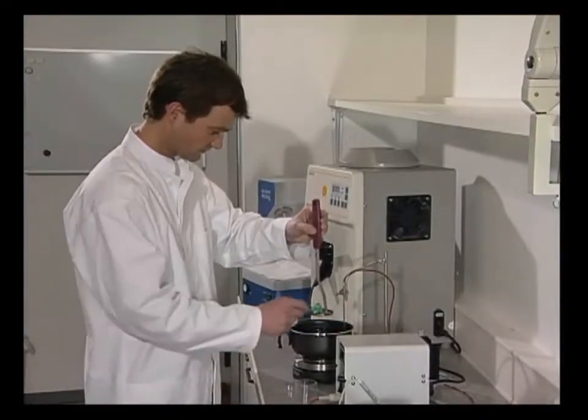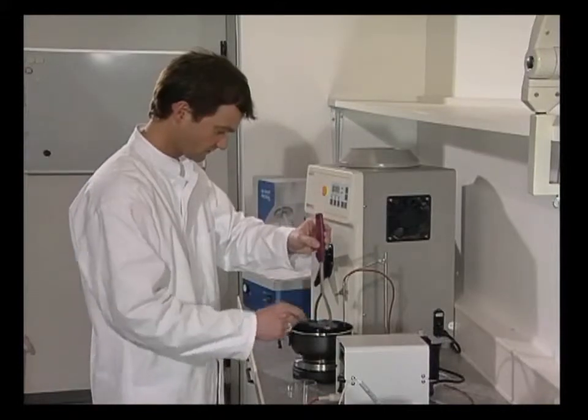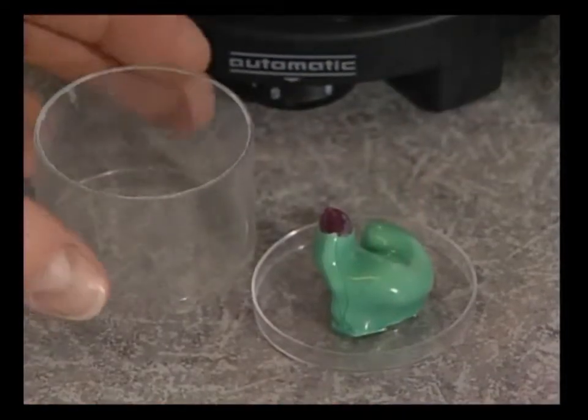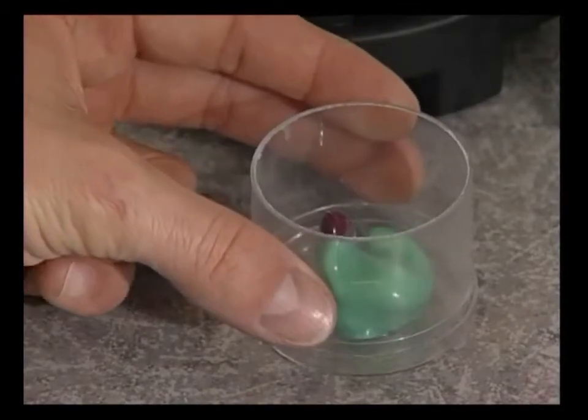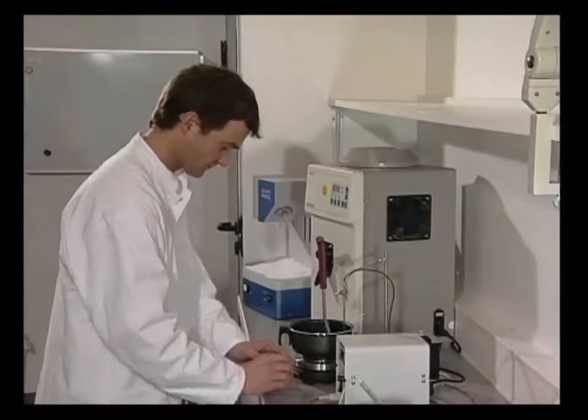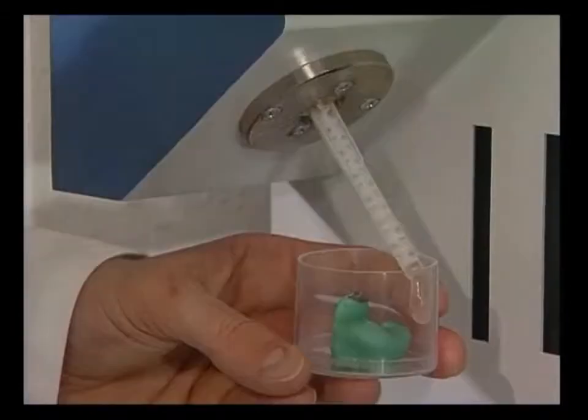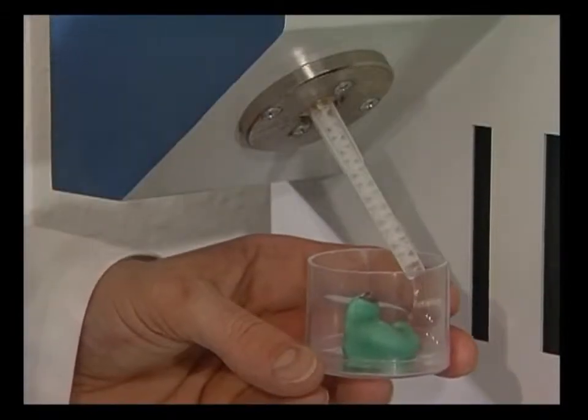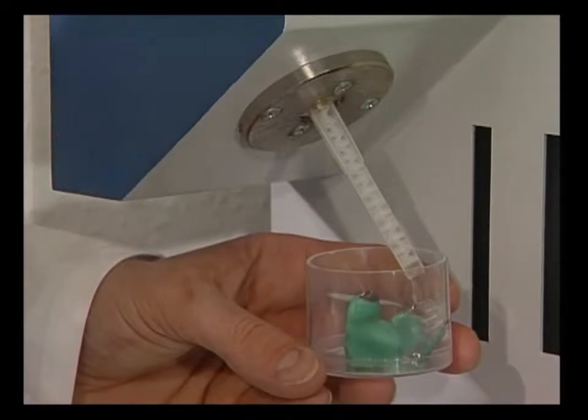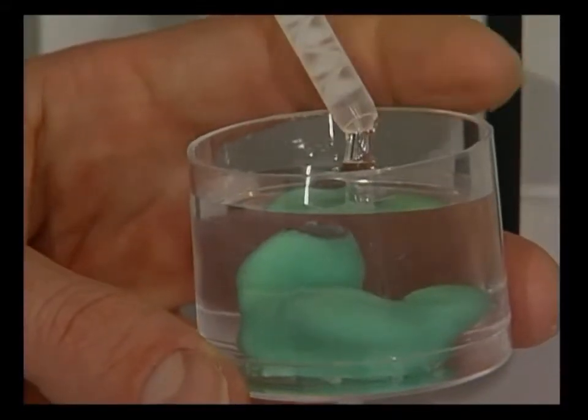After a brief cooling period, the impression is positioned in the middle of the bottom part of the investment form, and the ring form is inserted into the bottom. The investment form is held at a slight angle and filled until up to about 0.5 cm of the auditory canal are covered.